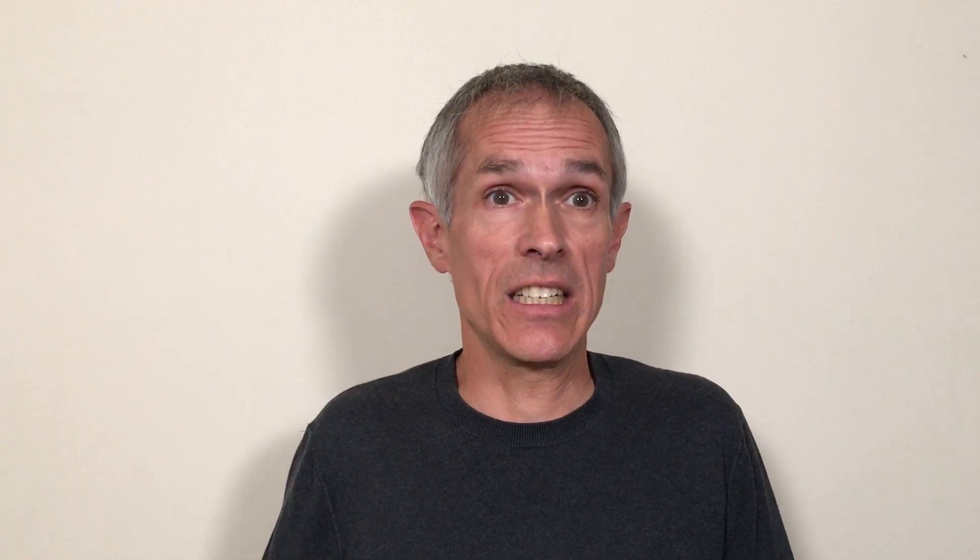Now let's try a rule that involves binary and ternary edges. This is a complex rule, but I'll describe it in words. To apply the rule, we find a binary edge from node 1 to node 2, and a ternary edge from node 2 to nodes 3 and 4. We delete both of those edges, create two new nodes 5 and 6, create two new binary edges from node 5 to node 3 and from node 6 to node 2, and create two new ternary edges from node 2 to node 1 to node 5, and from node 6 to node 5 to node 4.